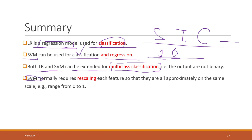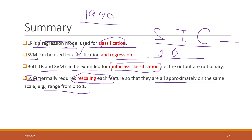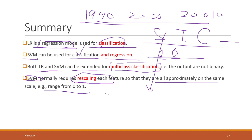SVM normally requires scaling all the features so that they are all on the same scale. Scaling features means the values will range from zero to one — for example, years like 1990, 2000, and 2010 would scale to 0, 0.5, and 1. So SVM does require you to scale the data first.